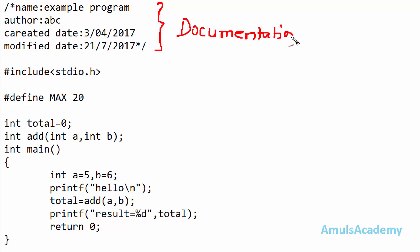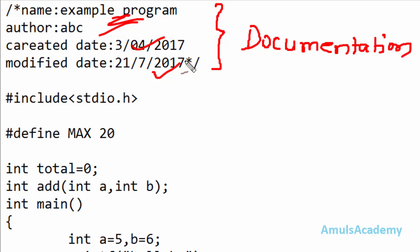In the documentation section, you will get all the information about the program, like program name, author, when it is created, when it is modified, something like that.